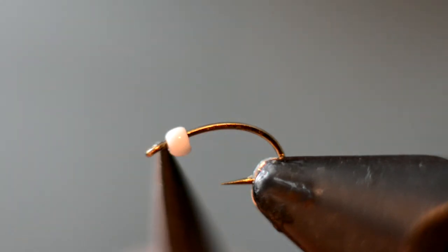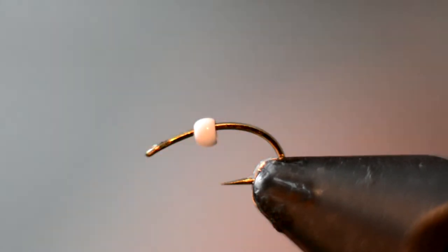So as you can see here I have a size 20 hook from Allen. It's a 201 model, but as you can see it has a straight eye and I think that's super key. The difference is whenever you have a turned down eye, I think that makes the fly less effective.